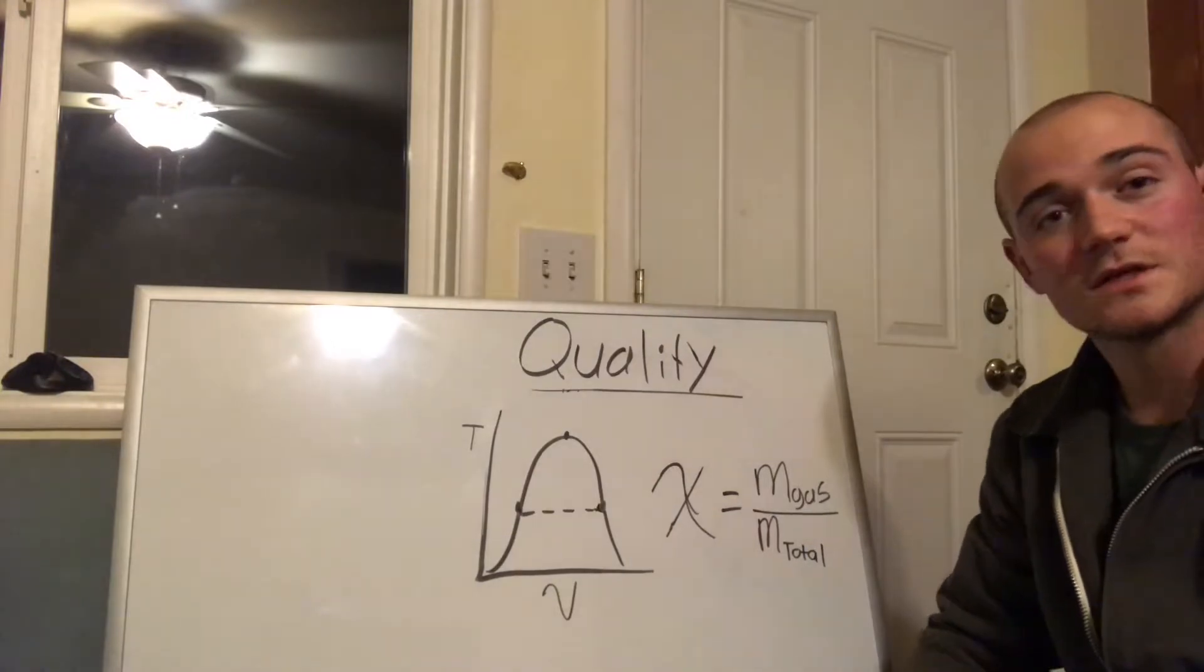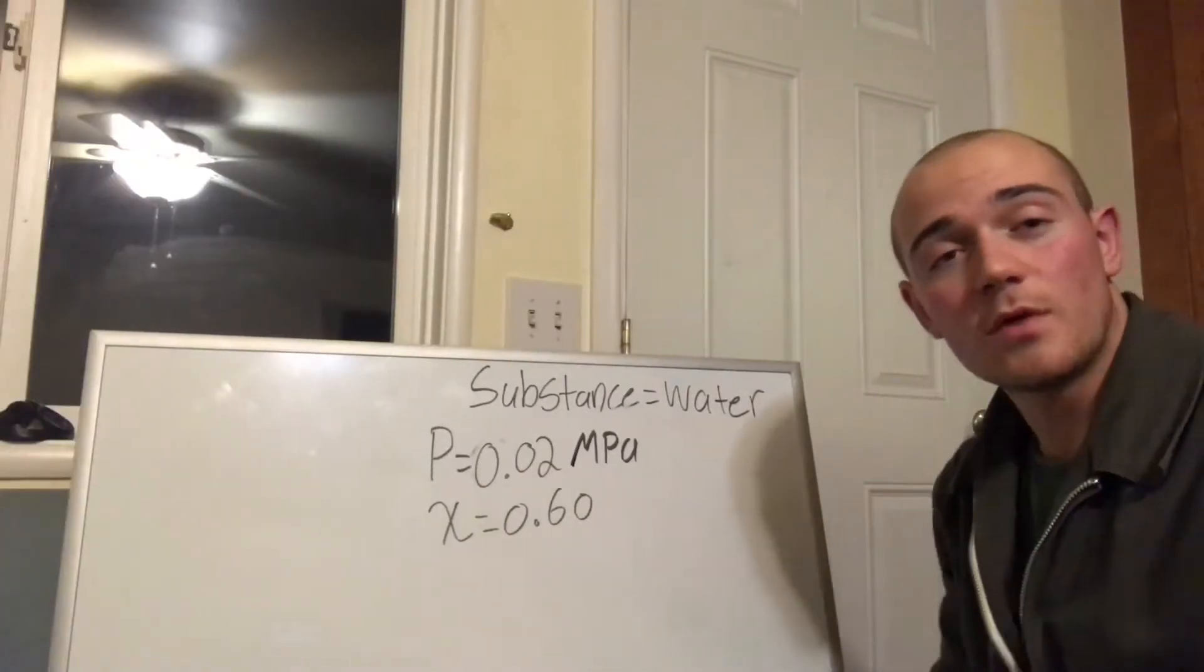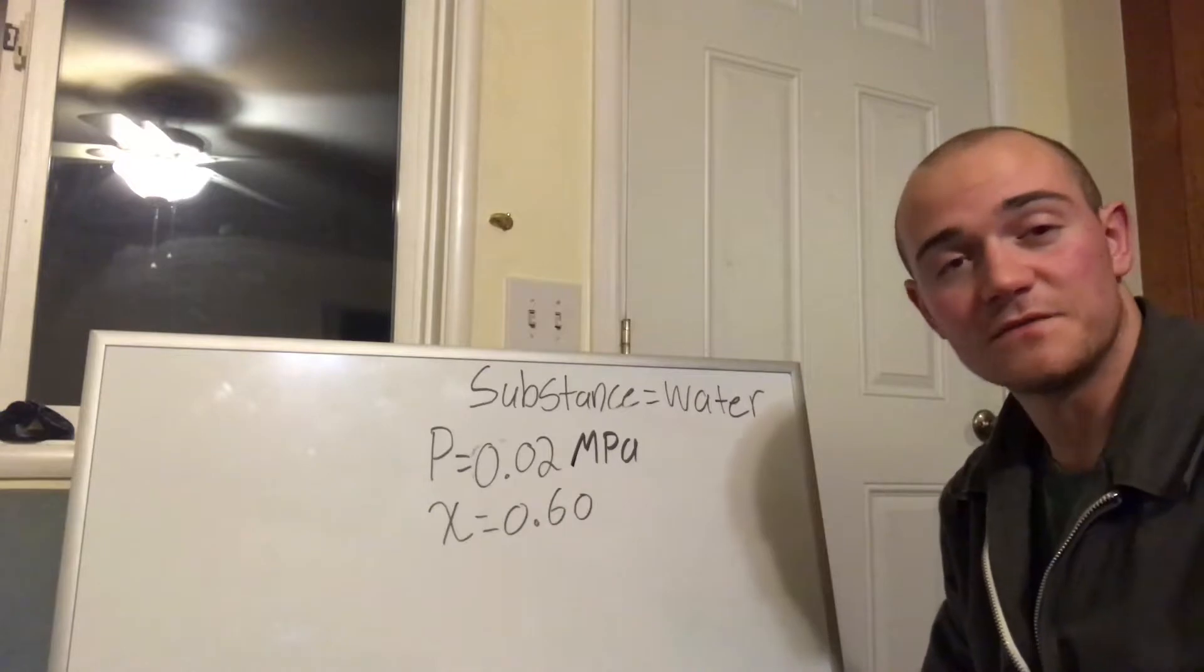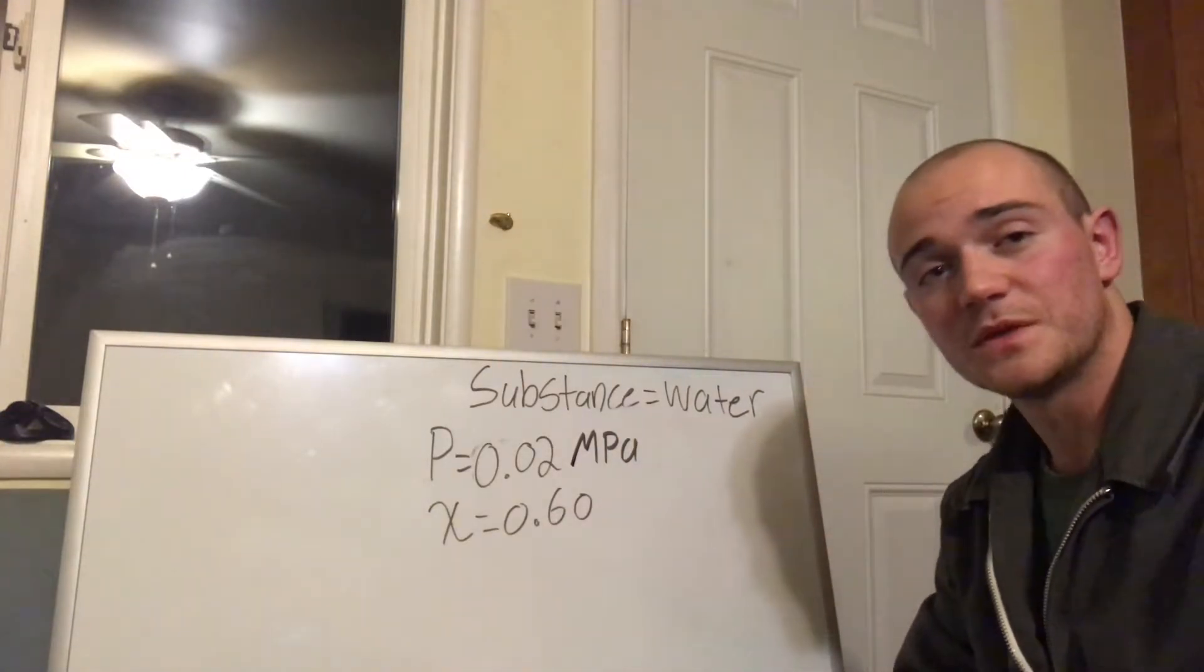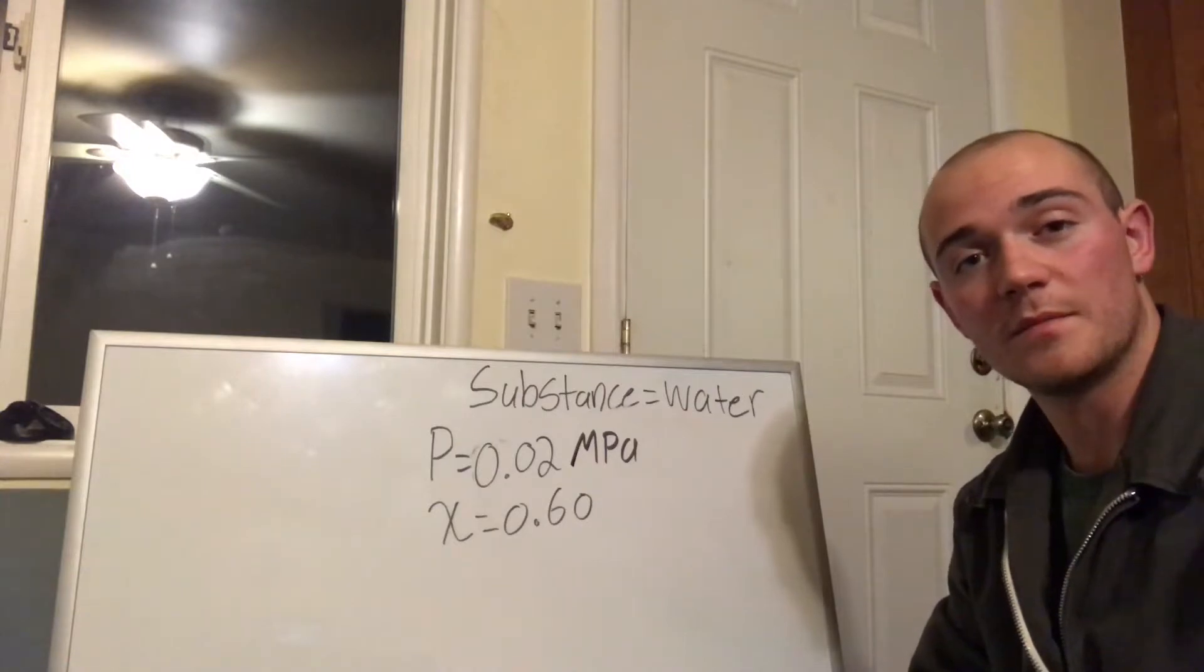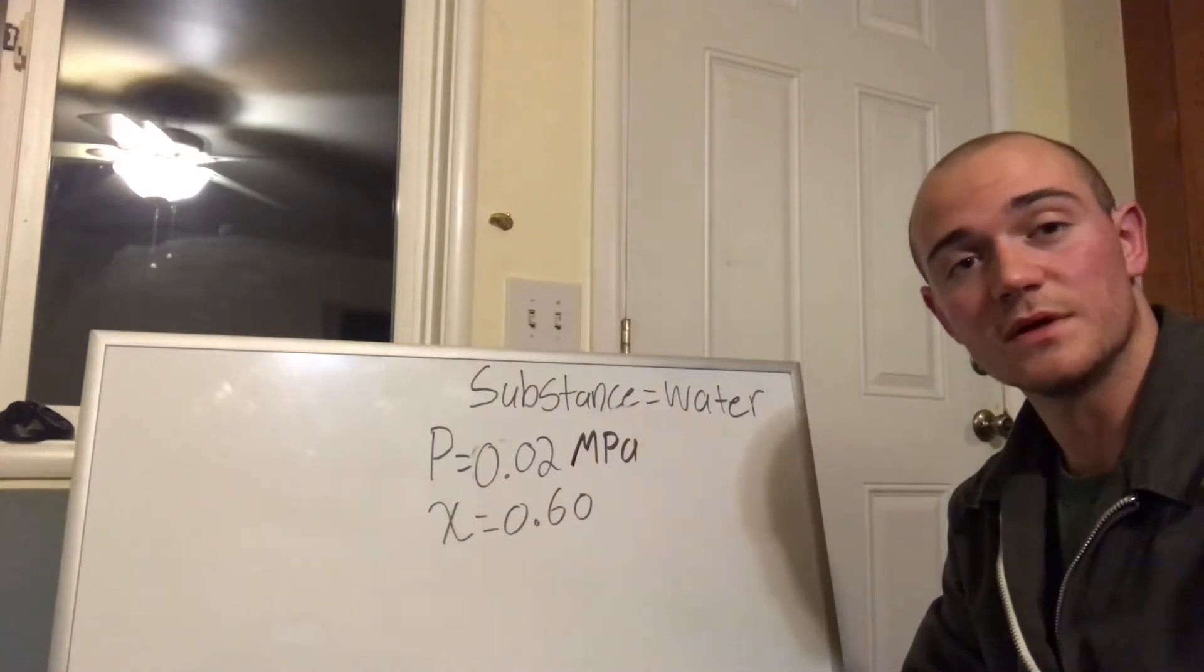So let's get through a problem. The problem that we're going to be looking at today has these variables: substance is water, the pressure is 0.02 MPa, and the quality is 0.60.